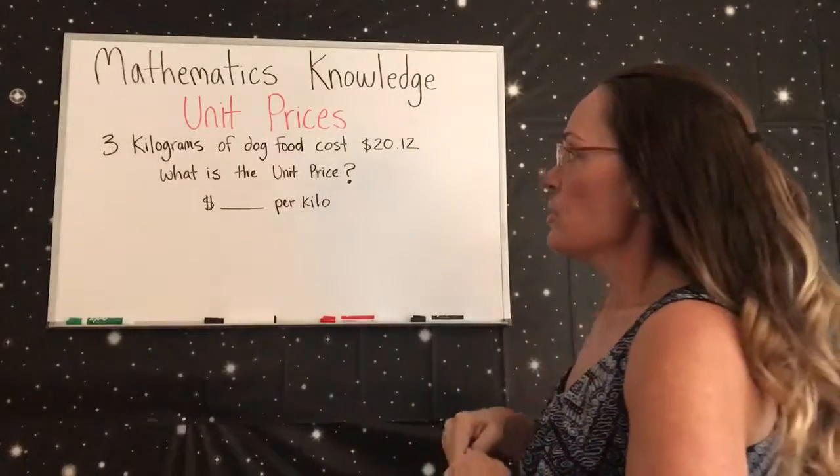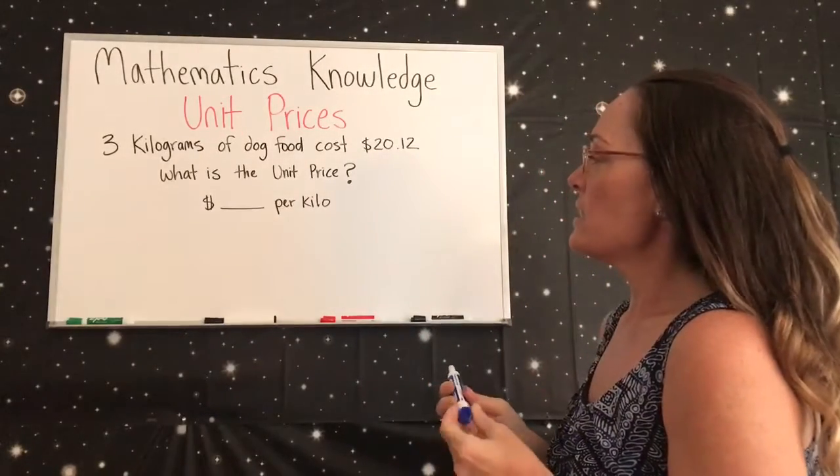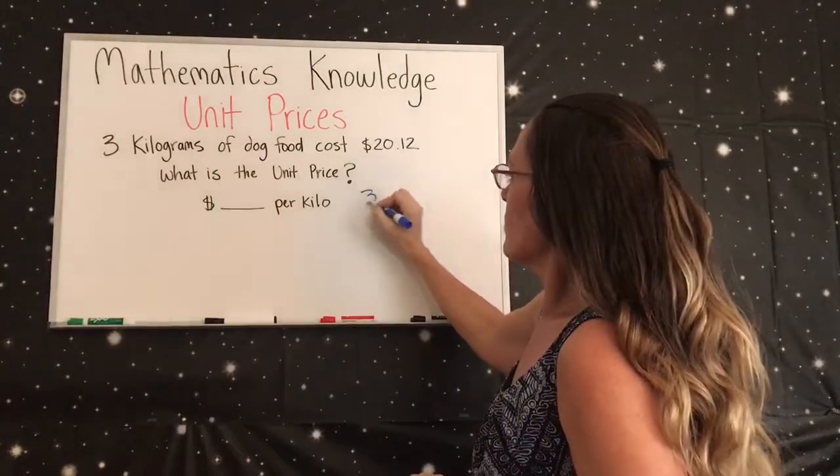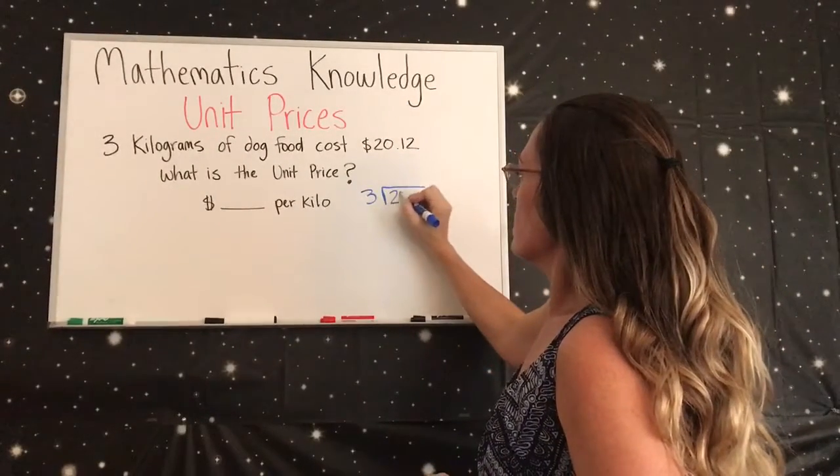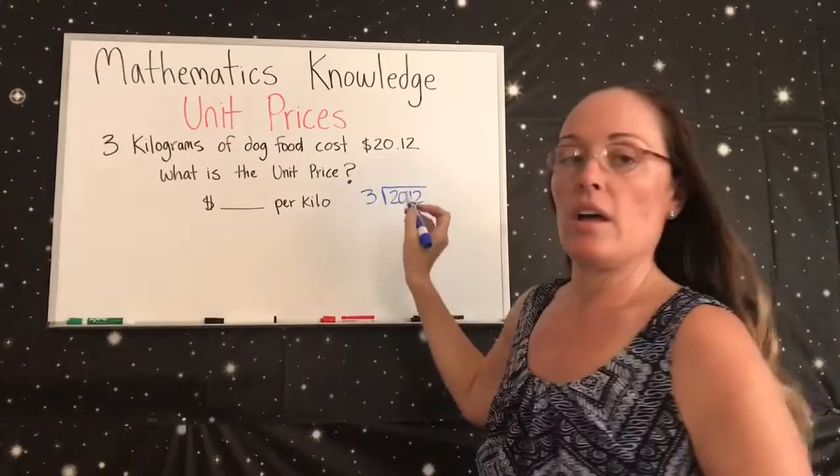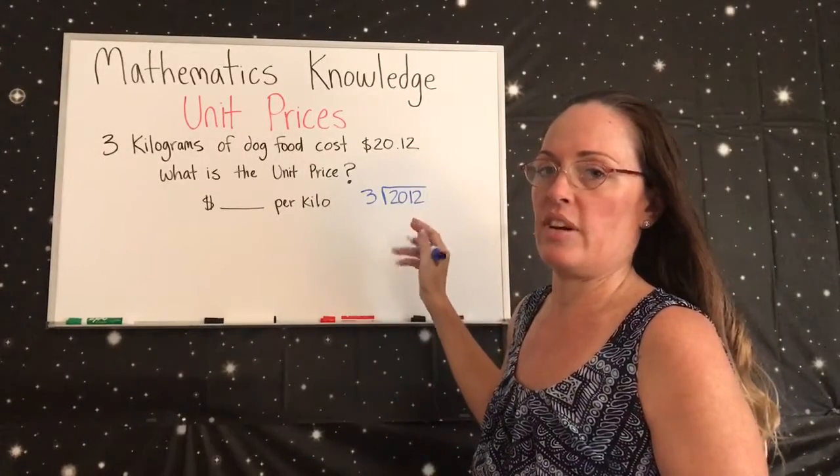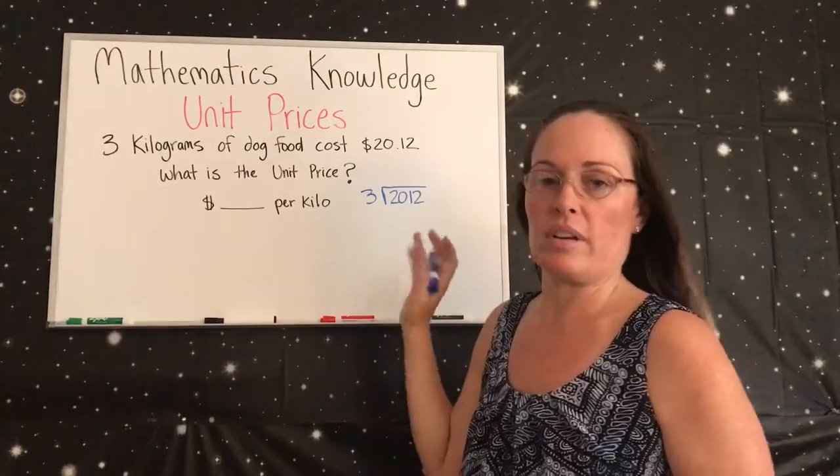We have 3 units, so all we're going to do is divide 3 into the 2012. I don't really concentrate on decimals until the very end because you can just put it back up there. It gets kind of confusing when you do your division.